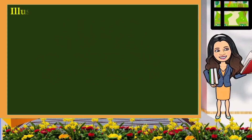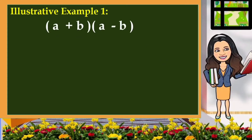Now let us have this expression: the quantity A plus B multiplied by A minus B. If you are going to observe the first terms, they are the same. If you are going to observe the variable on the last term, they are also the same but they differ in sign. One that separates the two terms is plus and the other one is minus. So, to find the product of these two binomials, we have different methods.